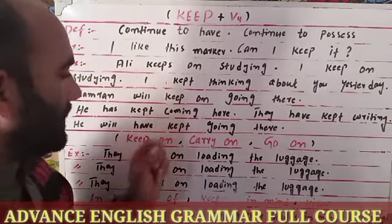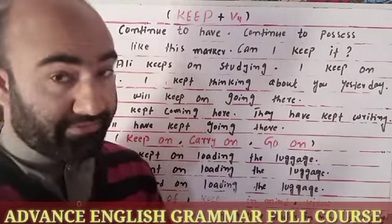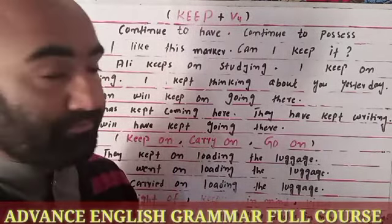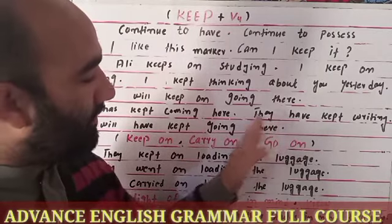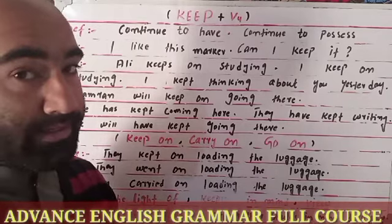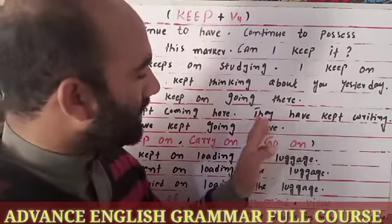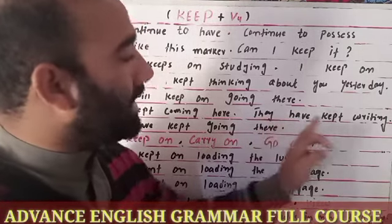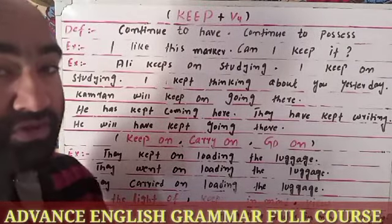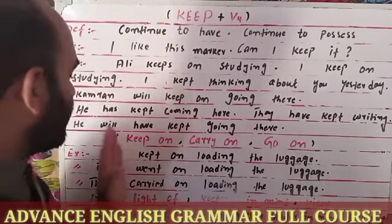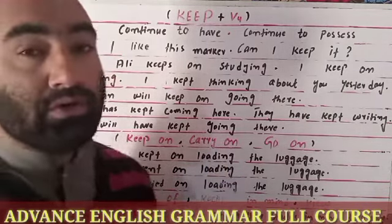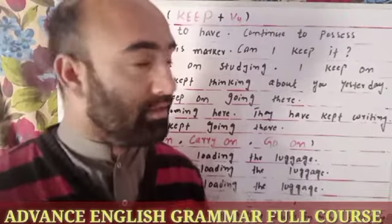Now let's talk about the present perfect tense: 'He has kept coming here.' With singular verbs we use 'has,' and with plural subjects we use 'have' — for example, 'They have kept writing.' For the future perfect tense, the structure is: 'He will have kept going there.'